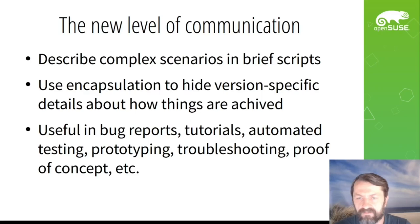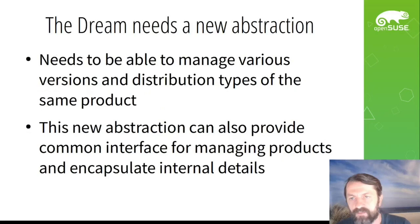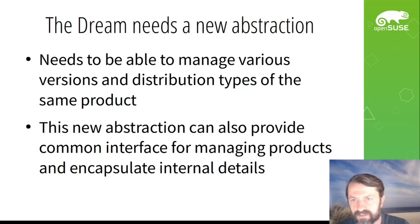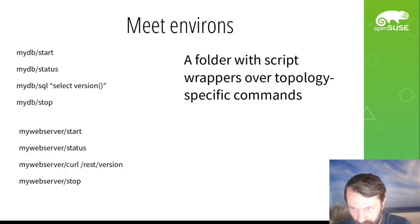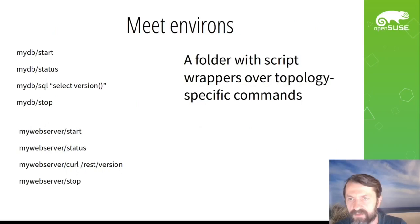This dream framework will bring a new level of communication. If we can satisfy all these requirements for a dream test framework, then it will be very easy to describe complex scenarios in bug reports and tutorials, maybe in automated testing, maybe some proof of concept, and it will improve cross-team communication. To be able to handle different versions of the same product, or maybe different distribution types, or forks, we need to introduce a new abstraction layer that will hide all details specific to these different versions.